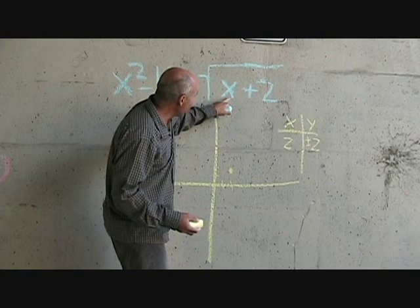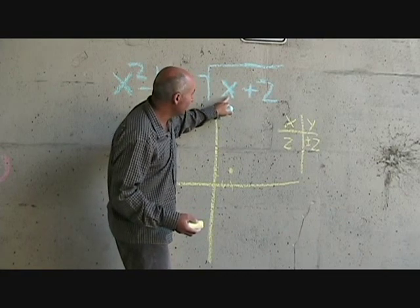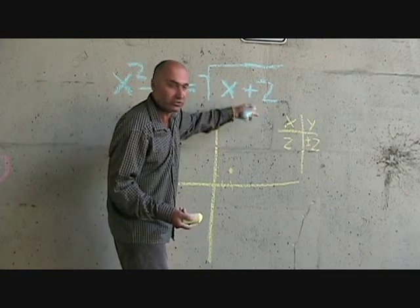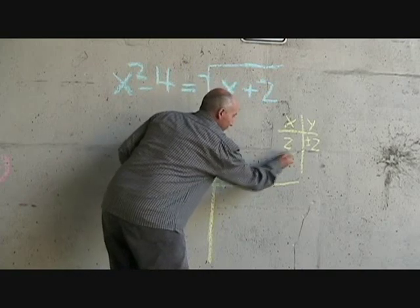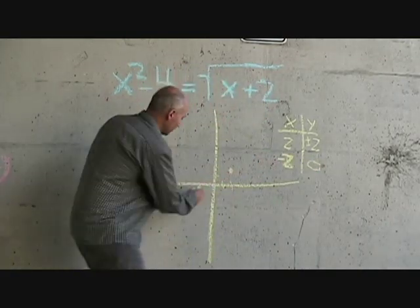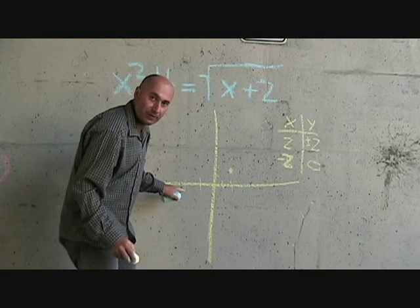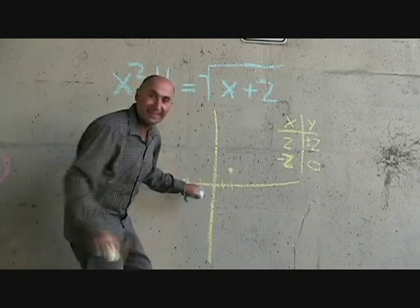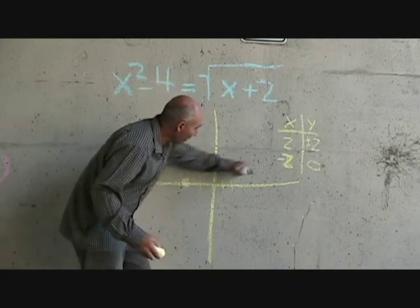When x is negative 2, if we put negative 2 here, negative 2 plus 2 is going to be 0, square root of 0 is just 0. So when x is negative 2, y is going to be 0. And this function goes off like this.